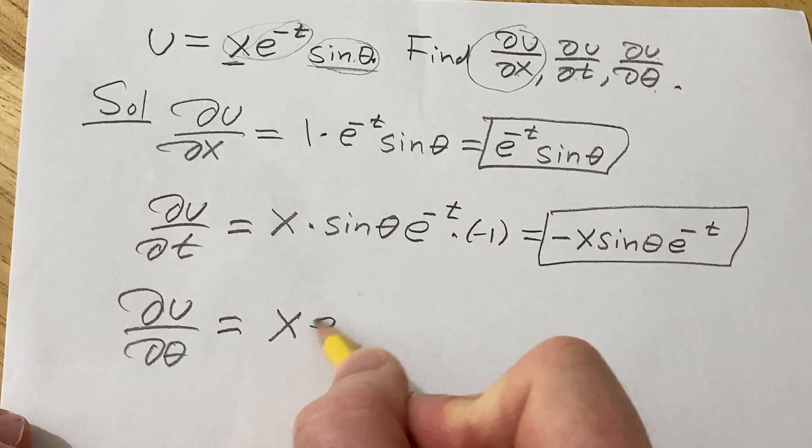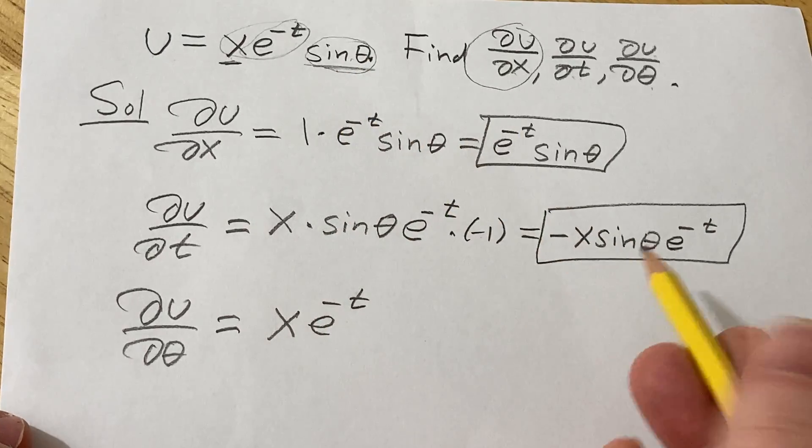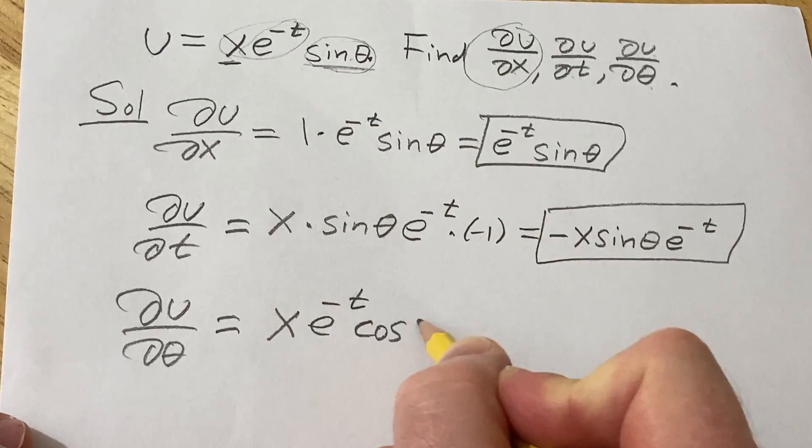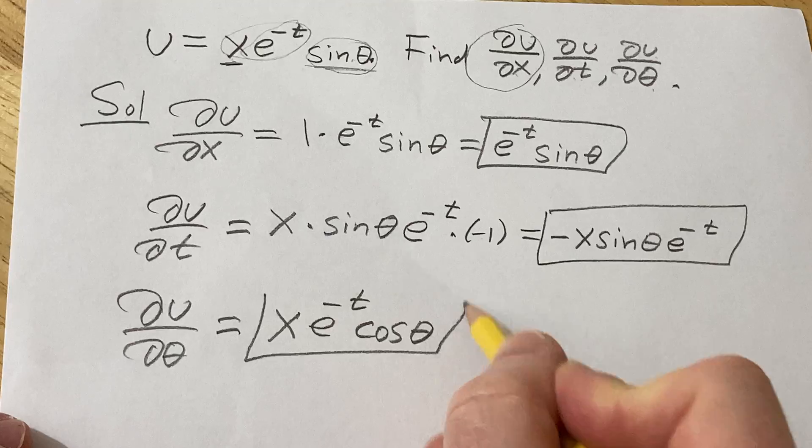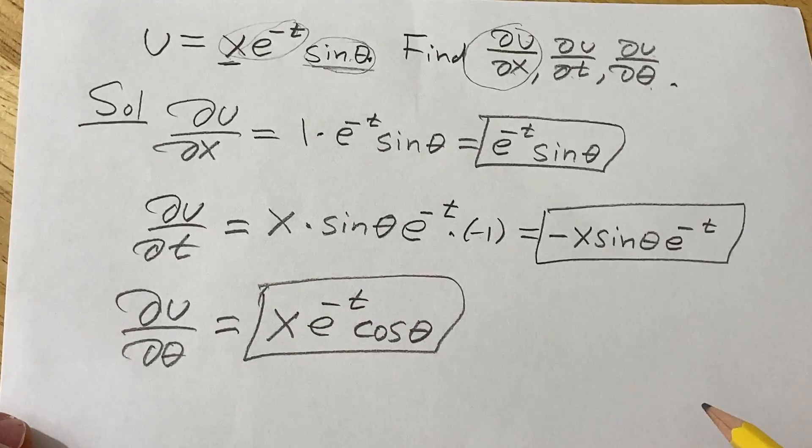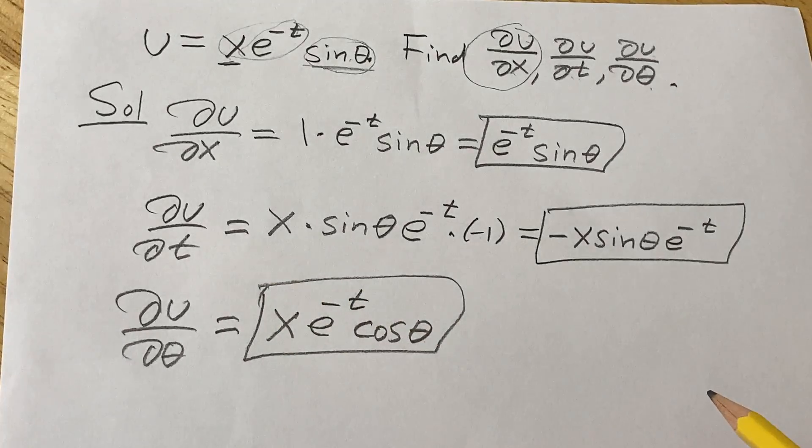xe^(-t). And the derivative of sine is cosine. So this is simply cosine of theta. So that would be the partial of u with respect to theta. I hope this video has been helpful. Good luck.